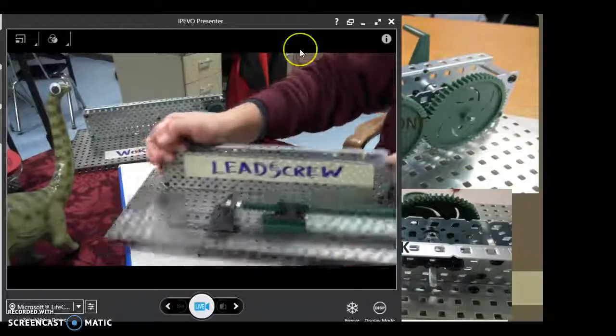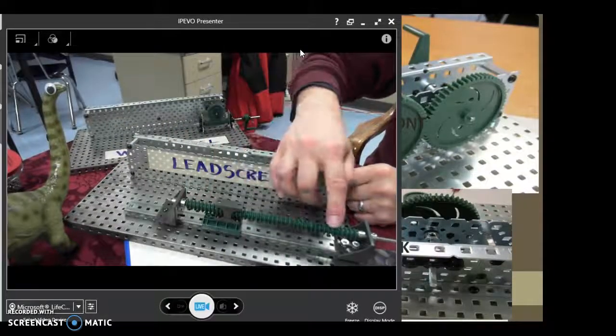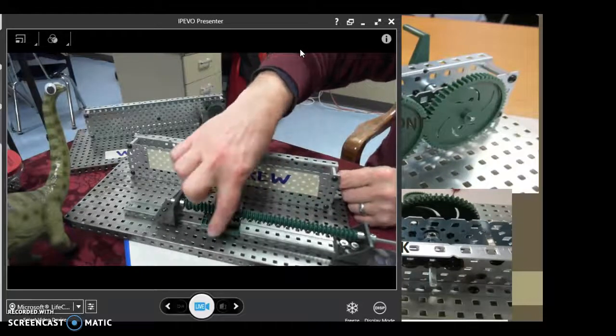For the leadscrew you need a very long axle, and then you need to attach all the worm gears on that axle. You have a platform here that slides across on the little channel base.